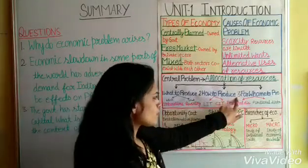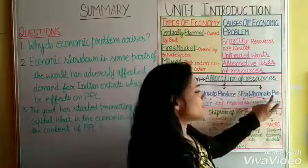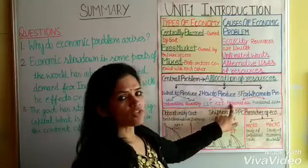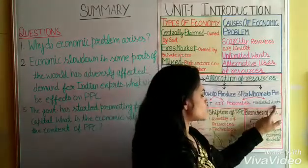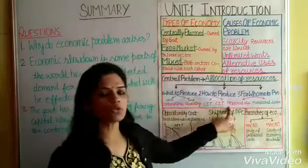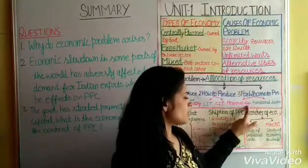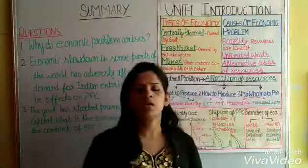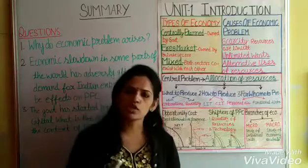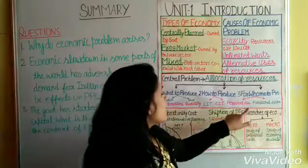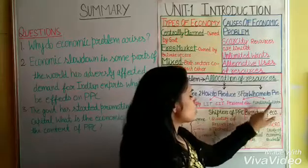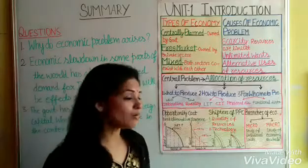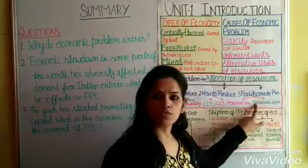Next is For Whom To Produce. This problem is related to the distribution of national income. There are two concepts: personal distribution and functional distribution. Personal distribution is related to the distribution of national product among consumers in society, while functional distribution relates to the distribution of national income among different factors of production.